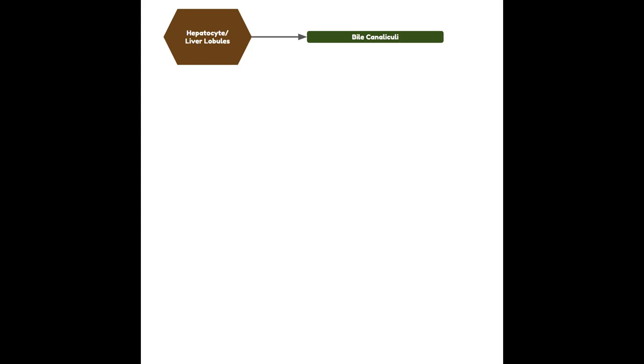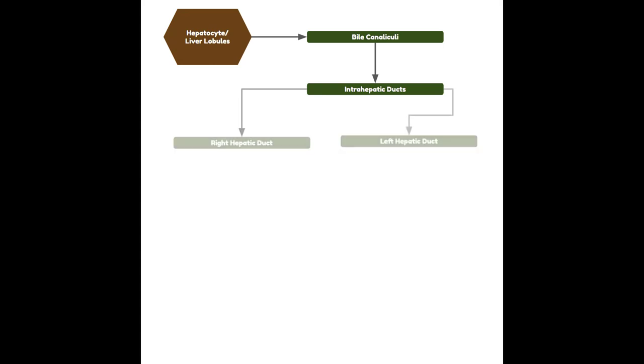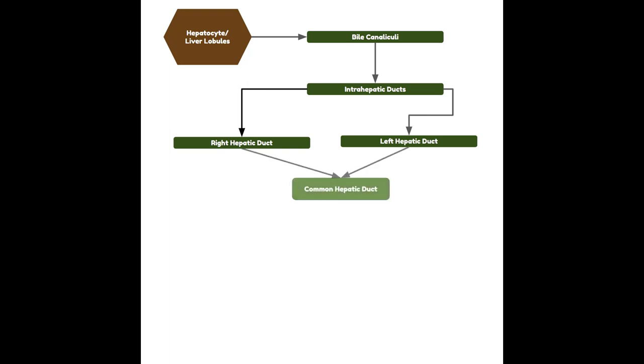Bile moves from the hepatocytes through the ducts by flowing through the bile canaliculi, through converging intrahepatic ducts, into the right and left hepatic ducts, which join to form the common hepatic duct at the porta hepatis. The right hepatic duct is responsible for the right lobe and the left hepatic duct for the left lobe. When the common hepatic duct joins up with the cystic duct, bile takes a turn through the cystic duct to go to the gallbladder.